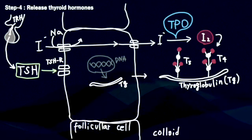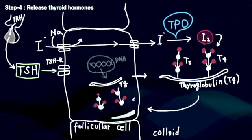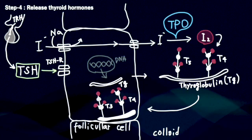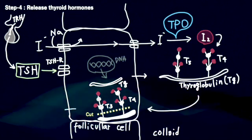Step 4. Release. When thyroid hormones are needed, they are taken up from the colloid along with thyroglobulin by follicular cells, cut into T3 and T4, and released into the blood.